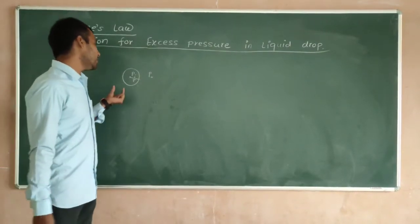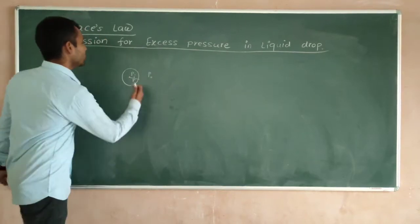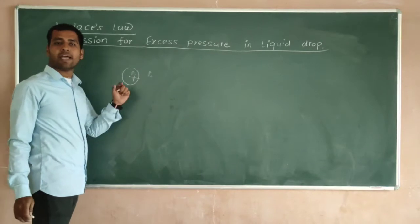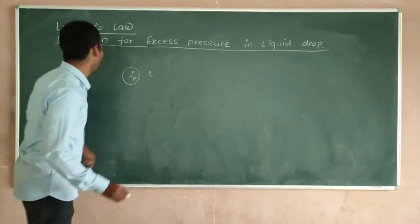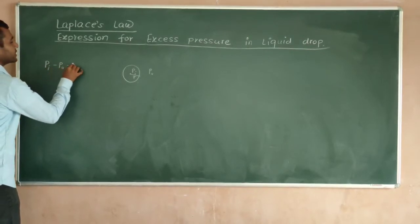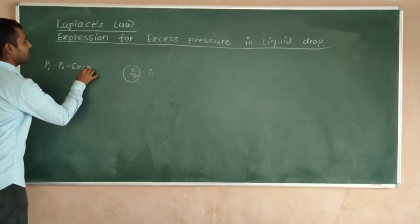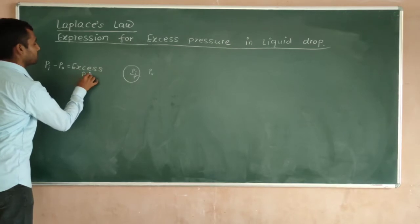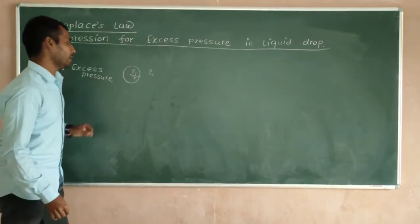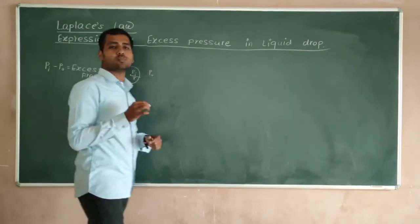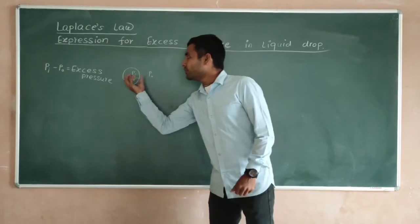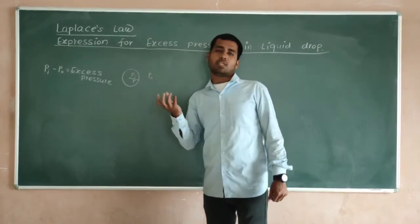Here we can see that P-I will be greater than P-O. So P-I minus P-O is the excess pressure. The outside pressure is called atmospheric pressure, and the pressure inside the liquid is called the inside pressure.